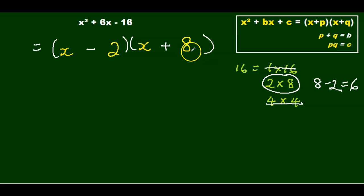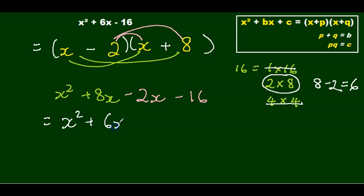And negative 2 times 8 gives me negative 16. If you want to check your work, let's do our FOIL. x times x gives me x squared. x times 8 gives me 8x. Negative 2 times x gives me negative 2x. Negative 2 times 8 gives me negative 16. Simplify. That gives me x squared plus 6x minus 16, which matches our original question.